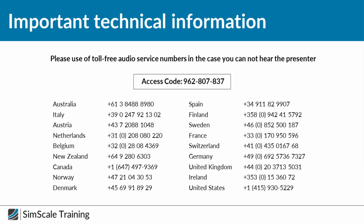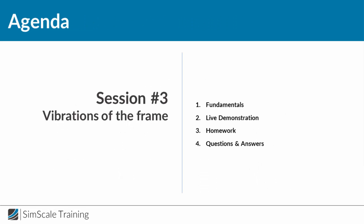Seems like everything is working. Alternatively, you can also use our toll-free audio service numbers to access the audio stream of this webinar. Just use one of the toll-free numbers you find on the slide and use the access code 962807837. Let's take a look at today's agenda.